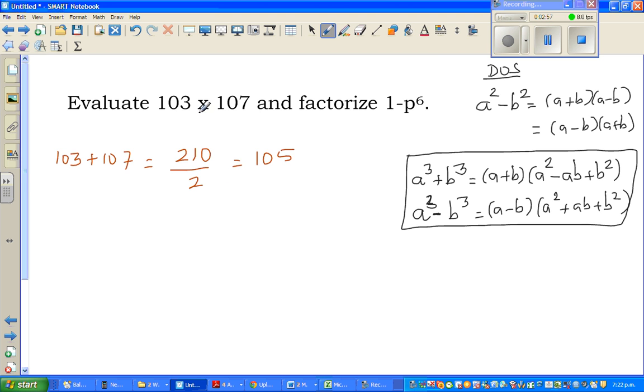Now what we are doing is we are finding the mean of these two numbers. The mean of these two numbers is 105. Now I can write 103 and 107 as 105. So I can write 103 times 107 is same as 105. I want you to think about this, 105. So how can you write 103 as 105 plus or minus? So this is minus 2. 103 is 105 take away 2, and 107 is 105 plus 2.